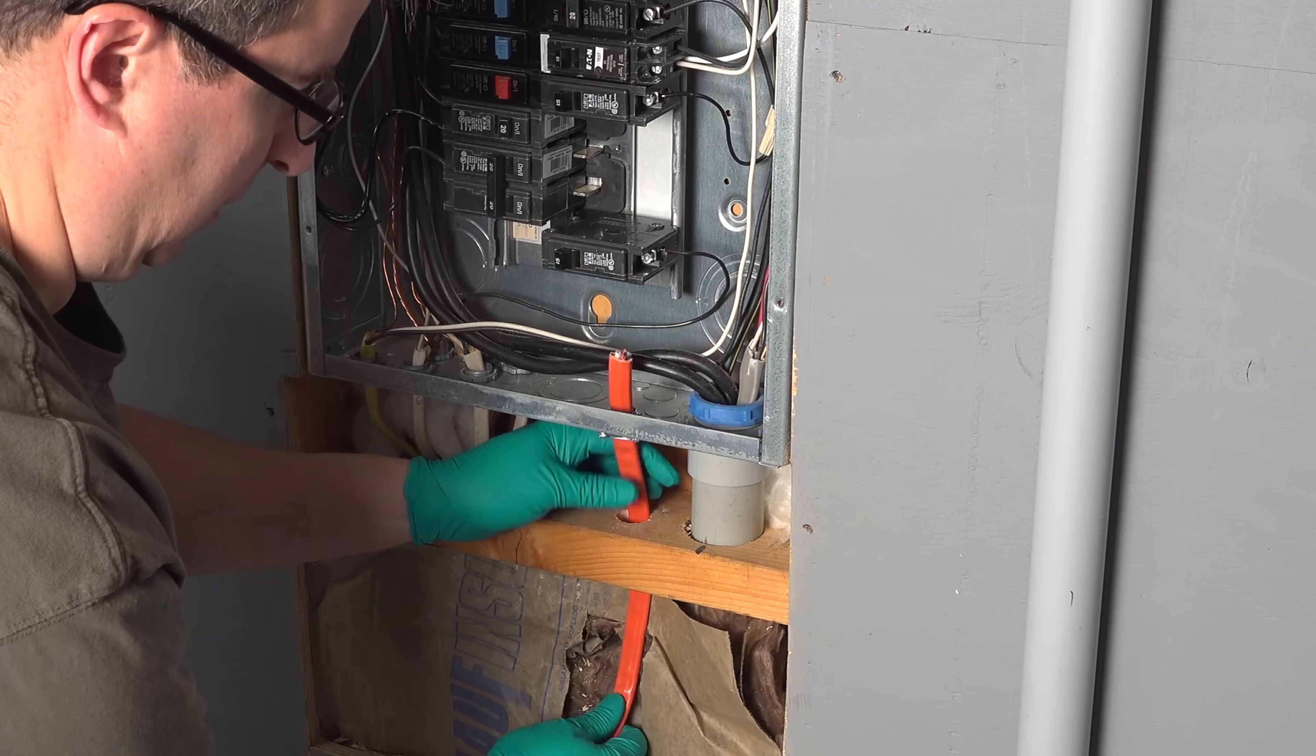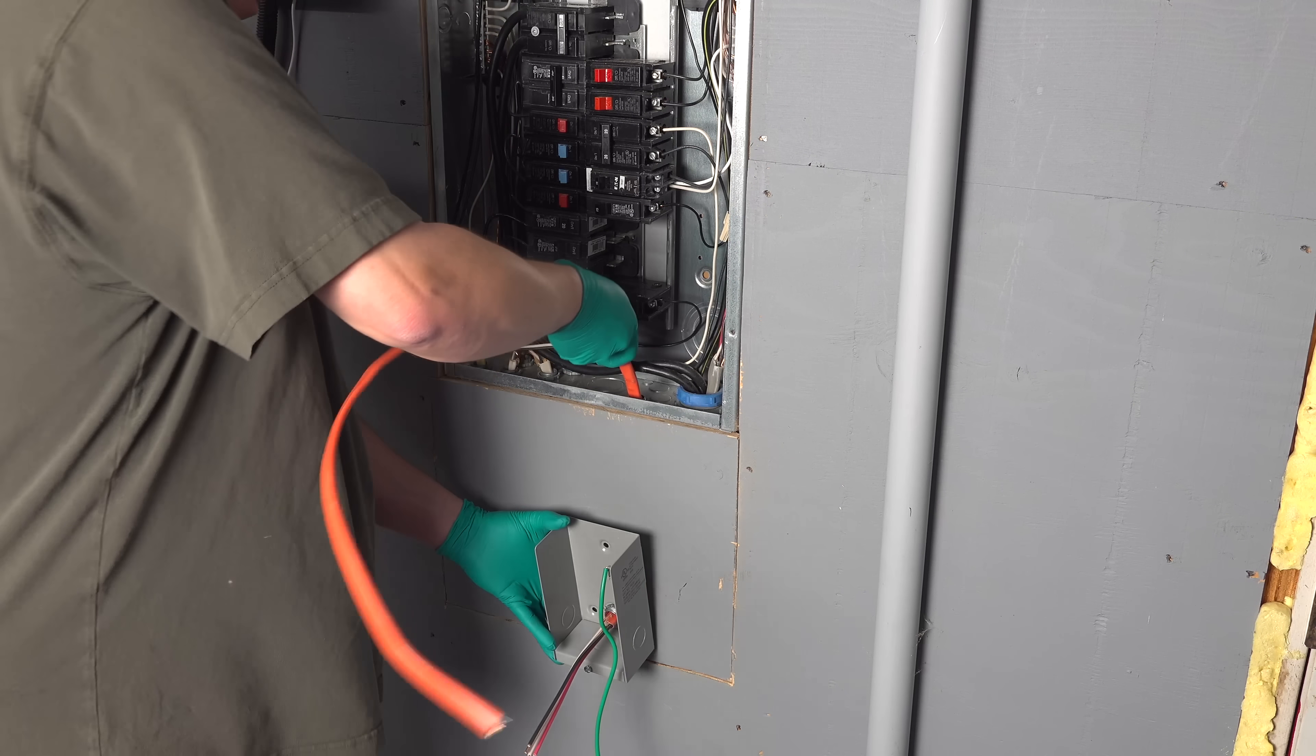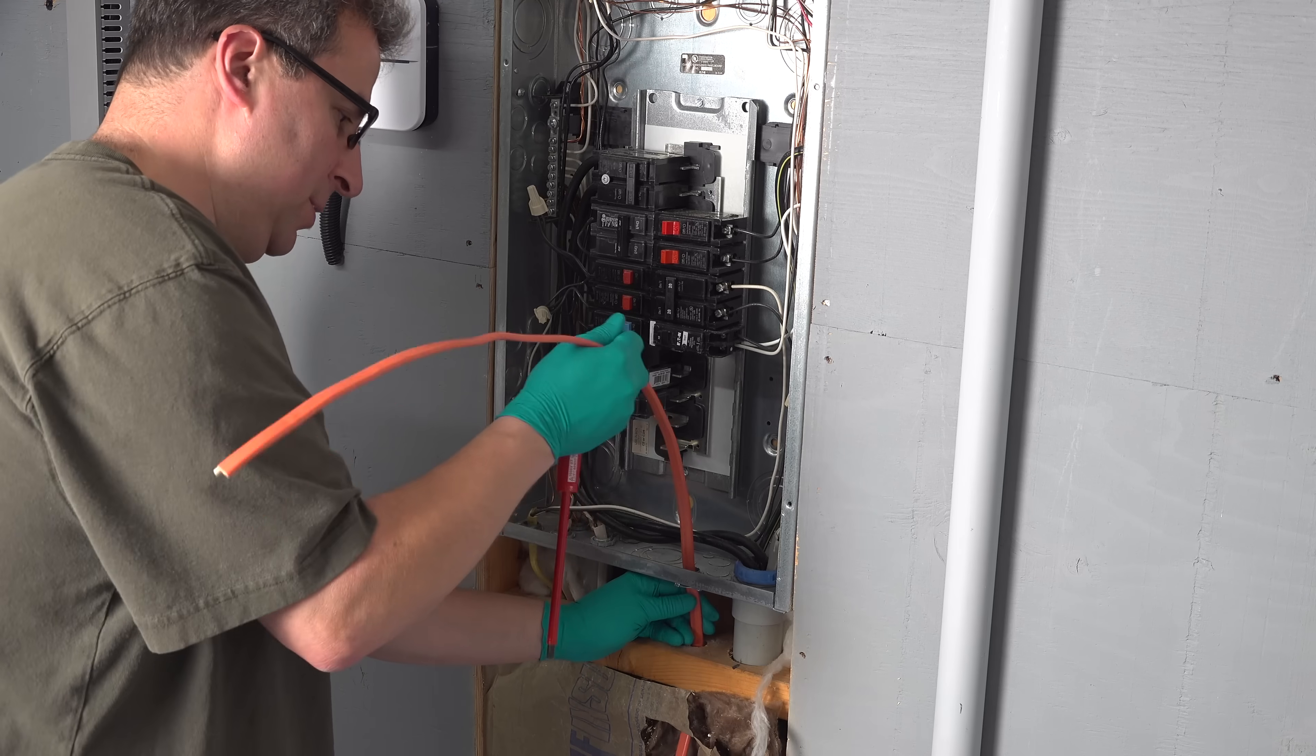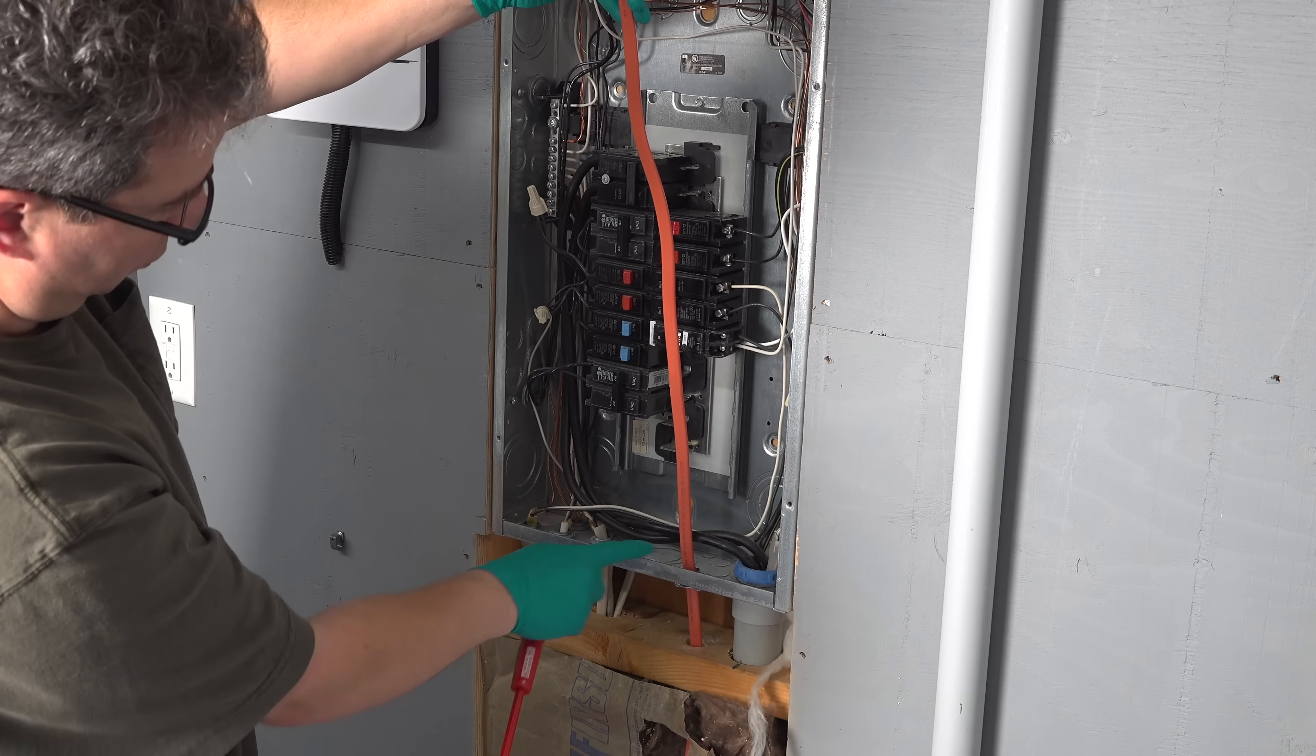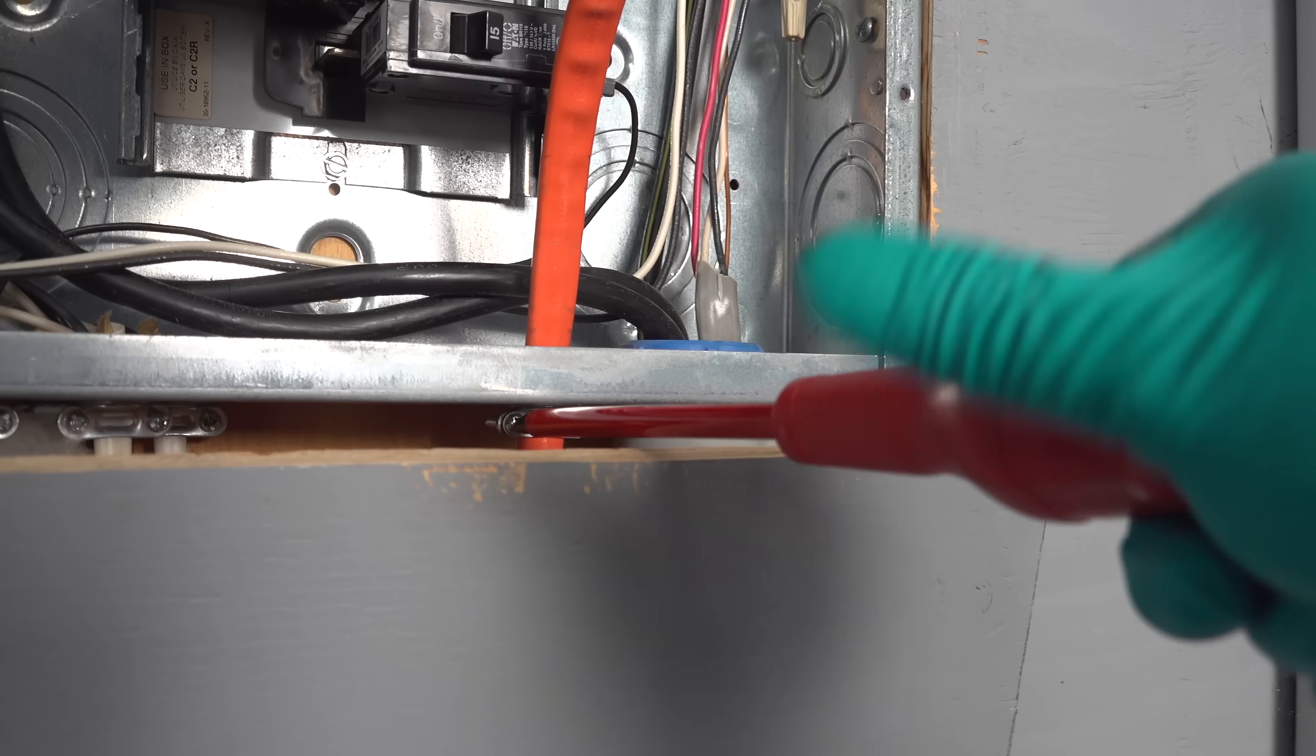For this installation, I'm happy to have the outlet right next to my panel, but if you want to extend this wire further, you can. They generally recommend going up to about 50 feet before you have to consider upgrading the size of the wire. Make sure that the wire you pull into your electric panel can reach at least all the way to the top, because by the time you bend it around, you are going to use some of it up and you don't want to run short.